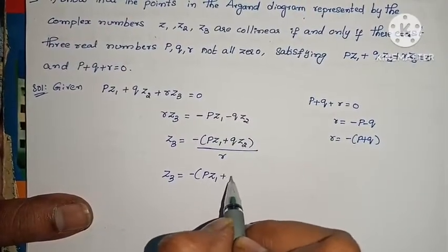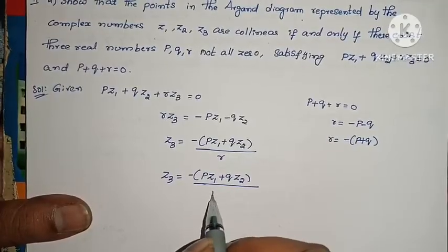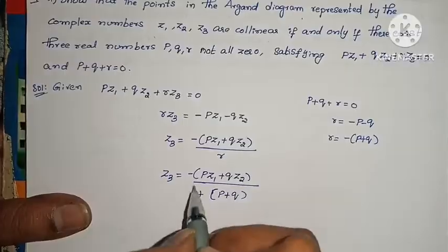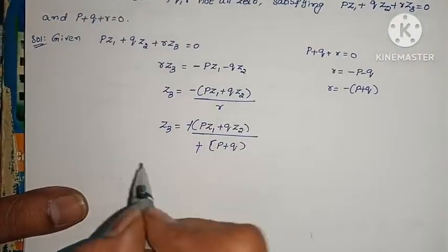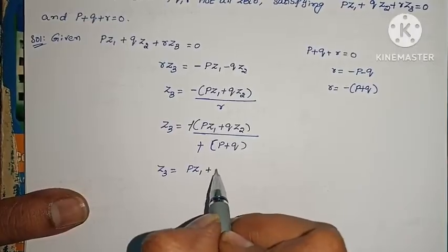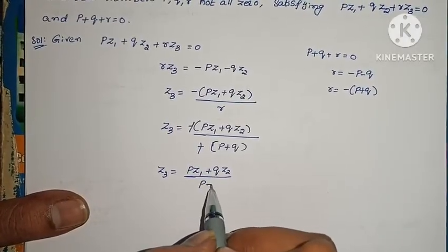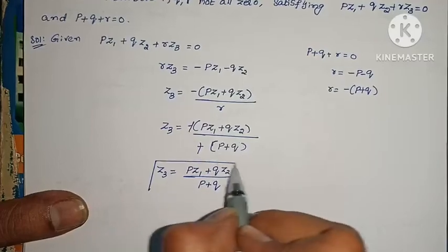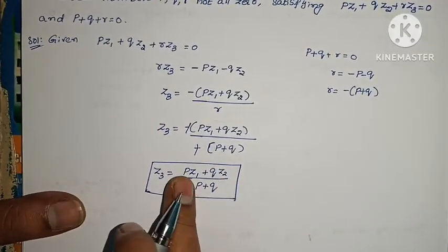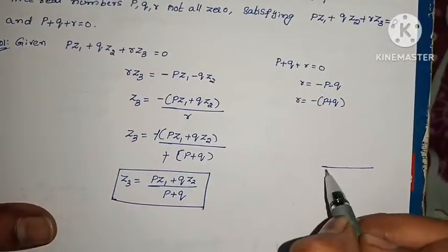We get PZ1 + QZ2 = minus of (P + Q) times Z3. Simplifying: Z3 = (PZ1 + QZ2) / (P + Q). This means Z3 divides the line segment Z1Z2, and the ratio is Q to P.